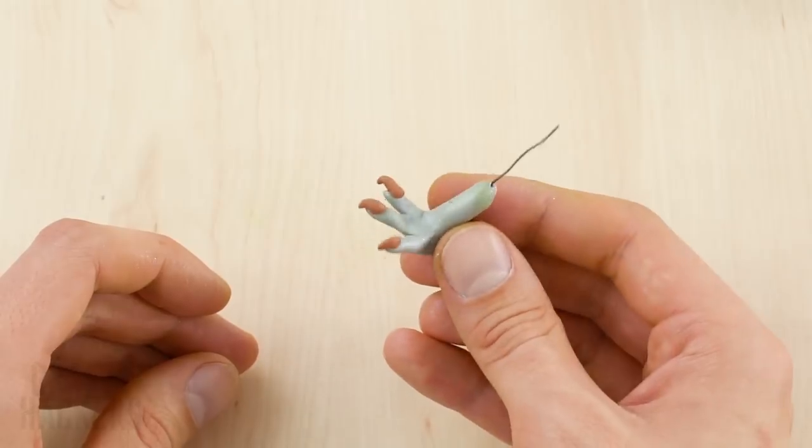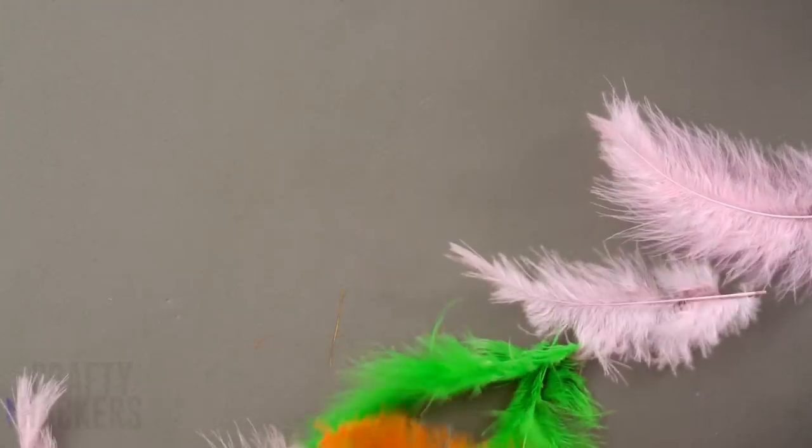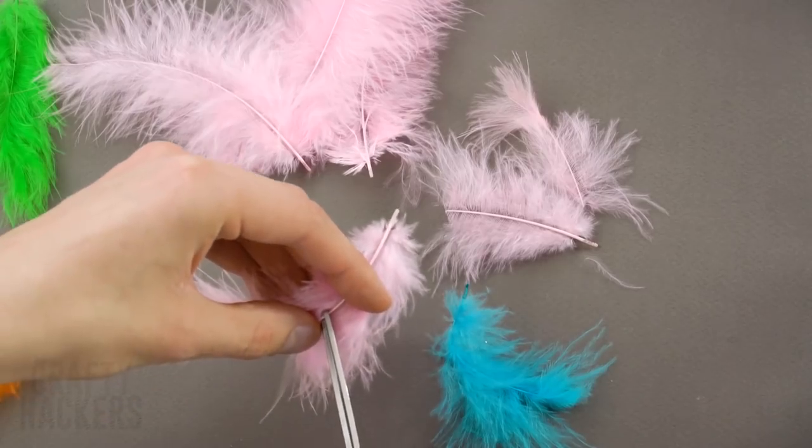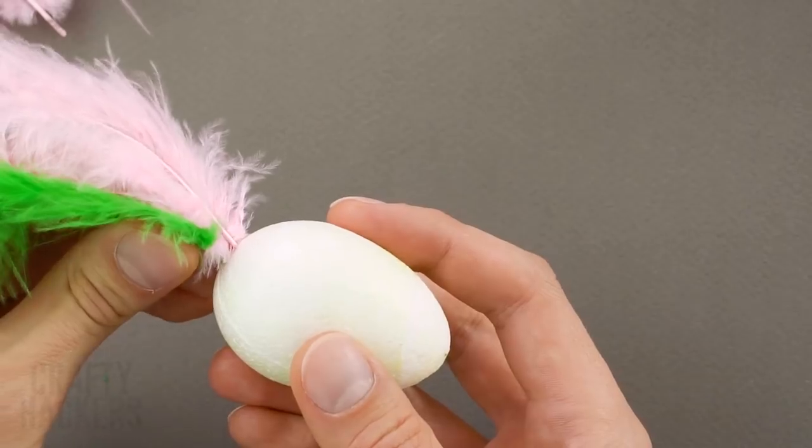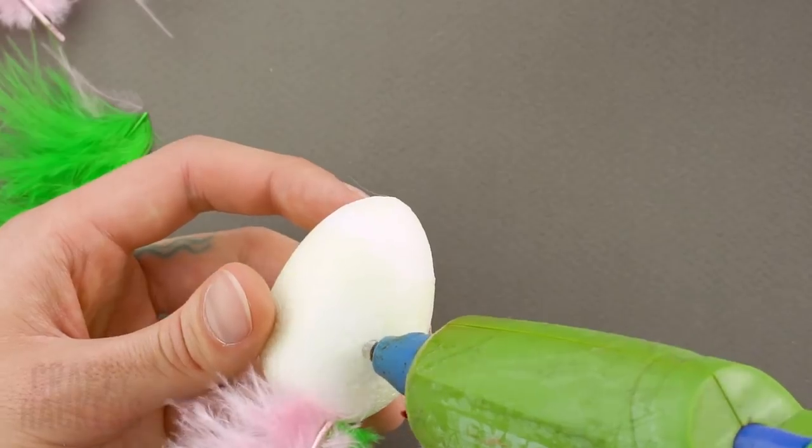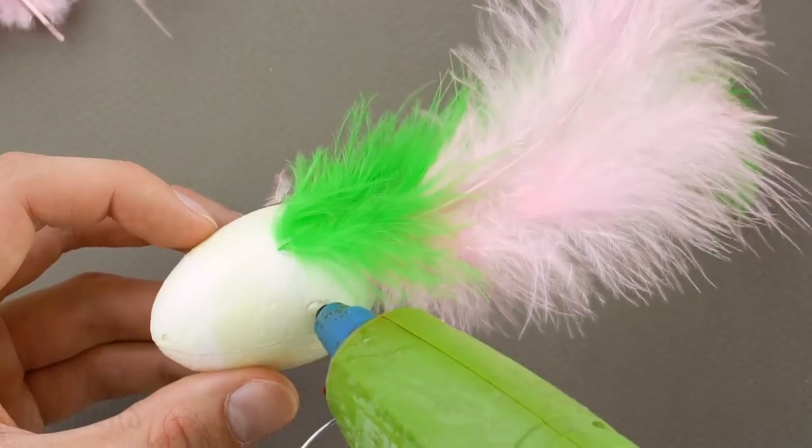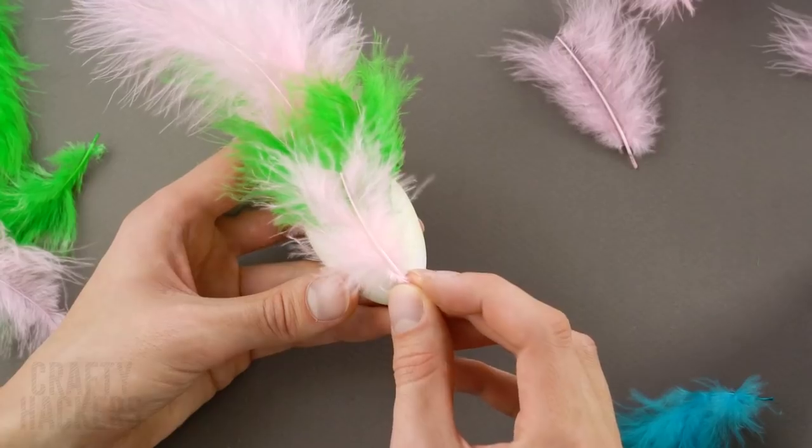Form out the little bird toes. And let's give him some toenails too. One thing you definitely need when making a bird is feathers. Lots and lots of feathers. Snip the feathers to fit your parrot. Then stick the ends of the feathers into the styrofoam egg. Then glue the feathers onto the side of the egg.